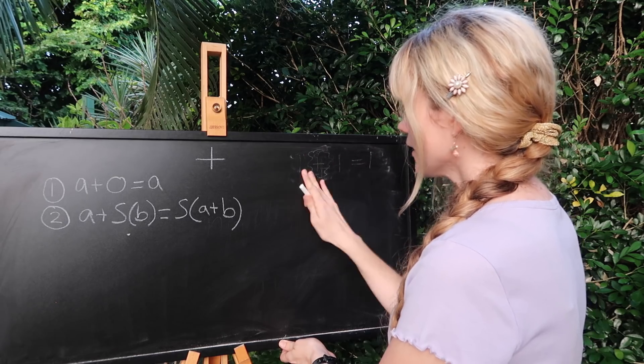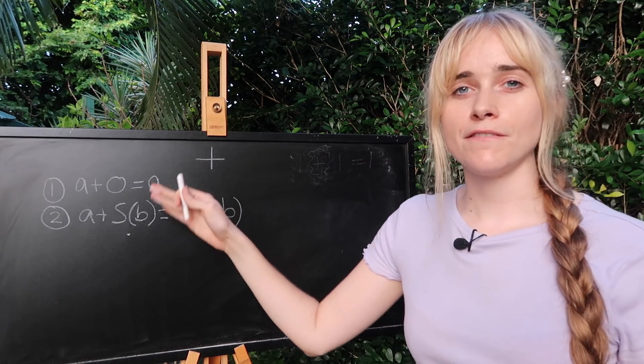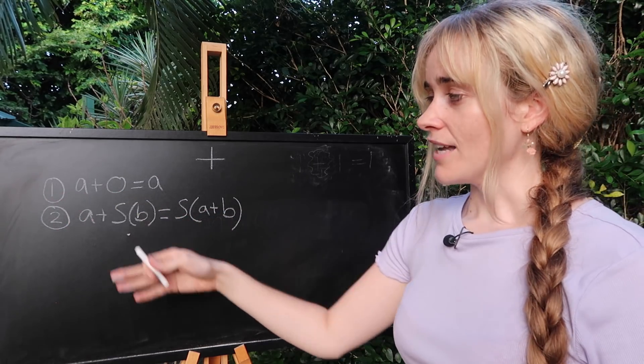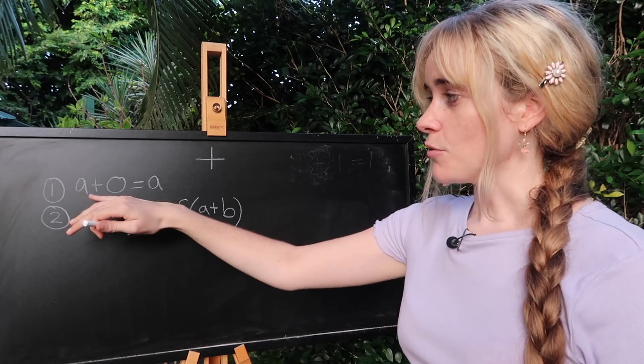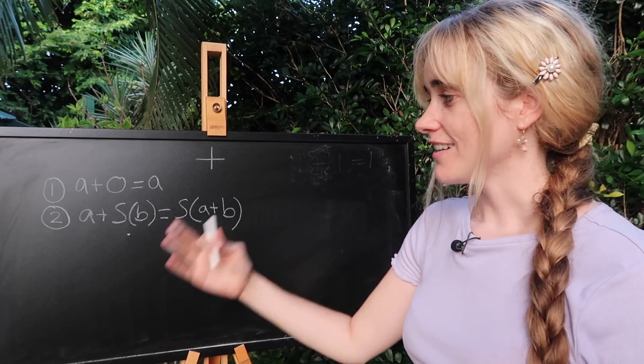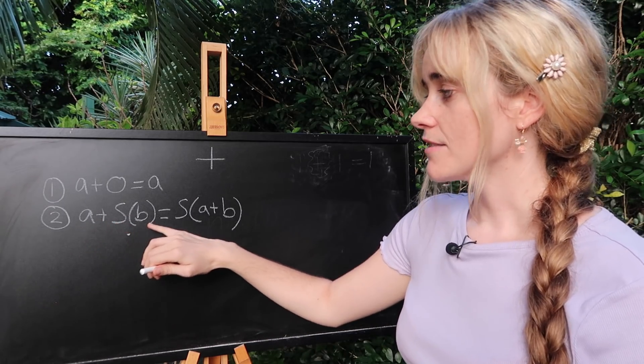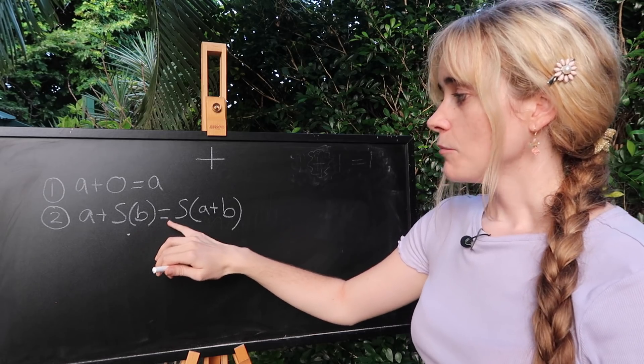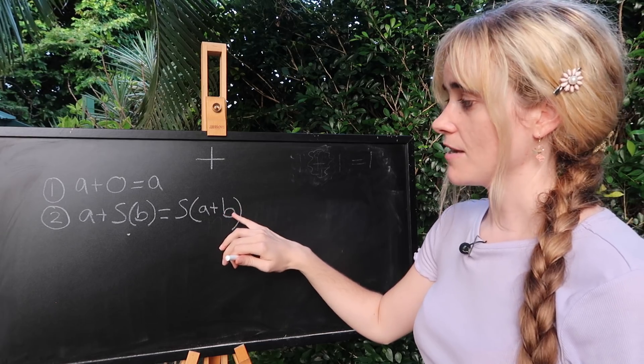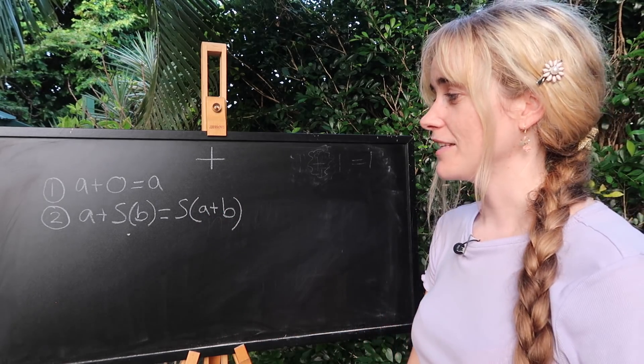So we want to be clear about what we mean by our addition symbol. And it's going to be defined recursively using these two rules. Number one, if you have a and you add zero to it you're going to still have a. Our second rule is that if you have a and you add the successor of b, then what you're going to have is the successor of a plus b. This makes sense if you think of some examples from how you're familiar with the addition.